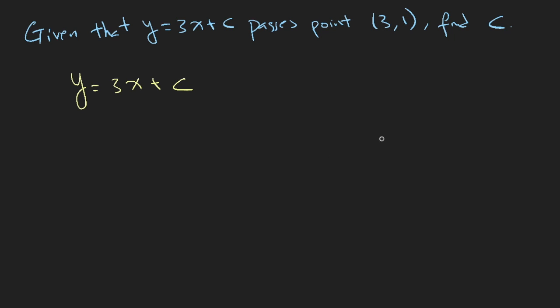So if the line looks something like this, one of the points here is (3,1). So if we put the (3,1) inside this equation, we will be able to solve for the unknown. So let's do that.